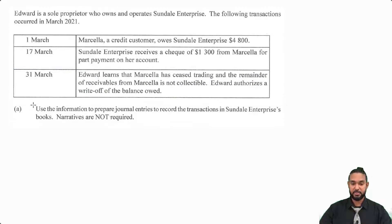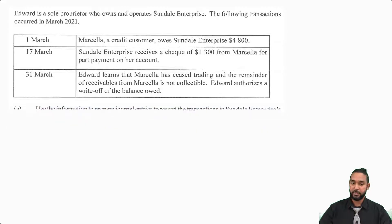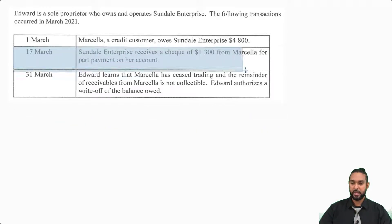So what we need to do is use the information to prepare journal entries to record the transactions in Sundale Enterprise's books. Narratives are not required. So again, we won't be doing any journal entries for March the 1st — that's just a statement of the balance that Marcella owes to Sundale.